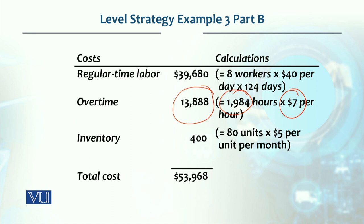Regular time labor cost will be the same as in the subcontracting plan, since we have the same 8 workers. Inventory of 400 units is also maintained. Adding all costs together, the total cost for this overtime plan comes to $53,968.